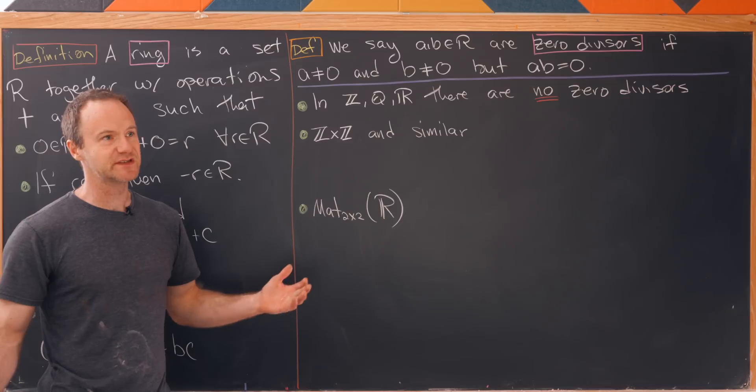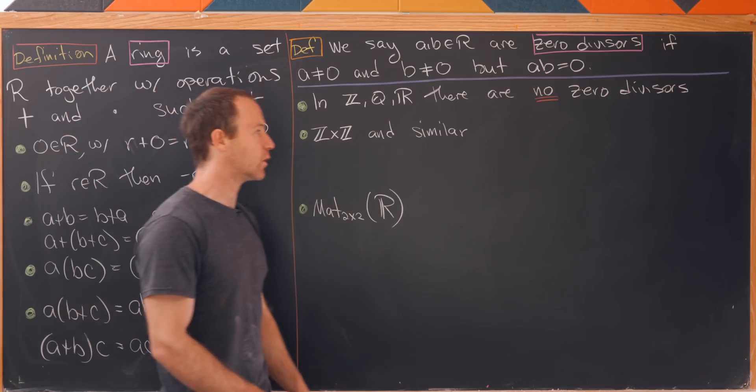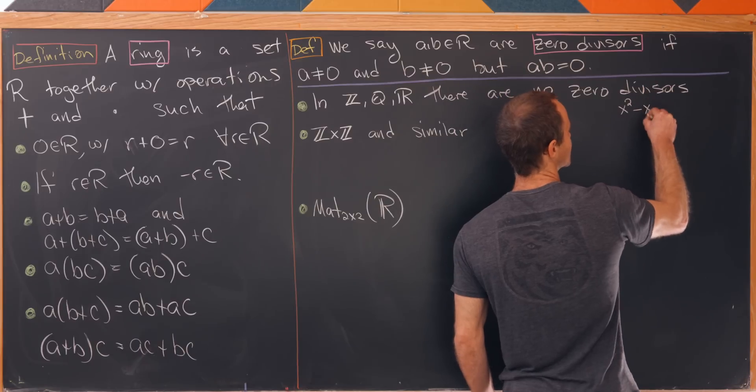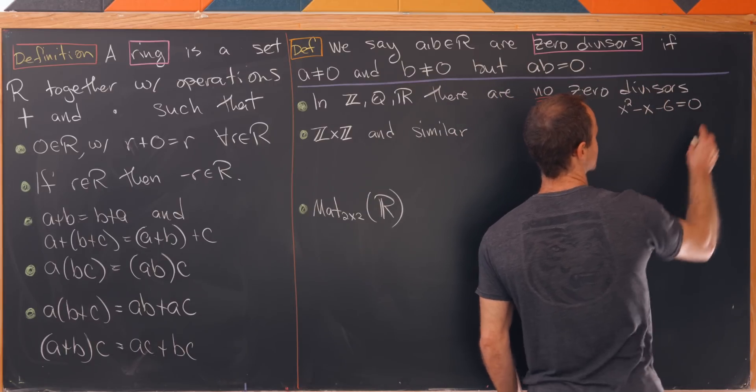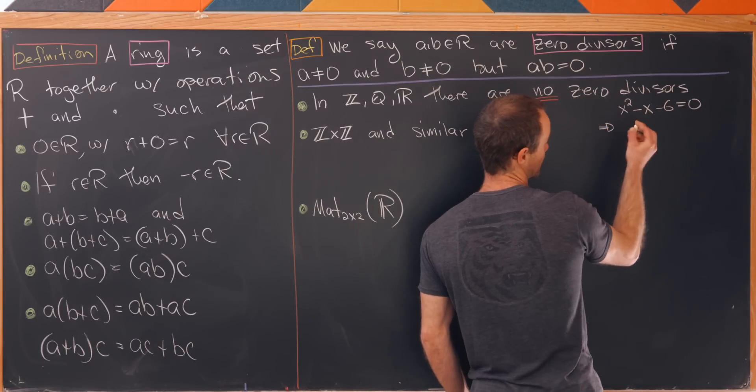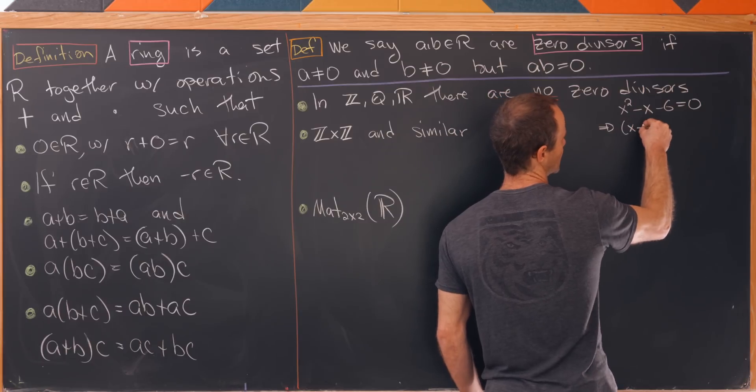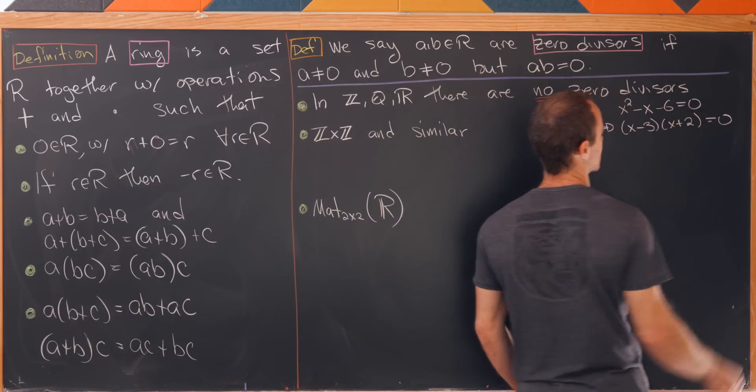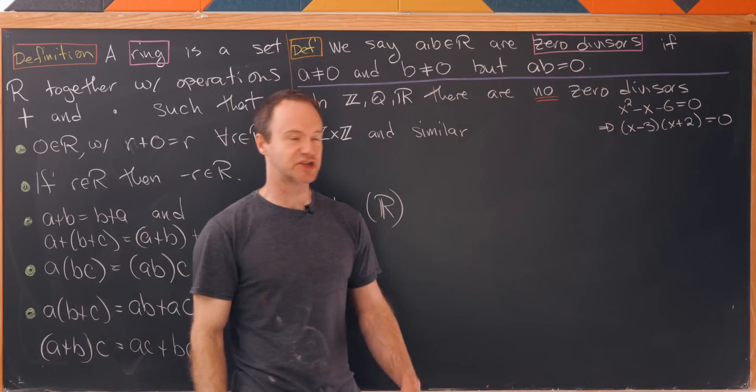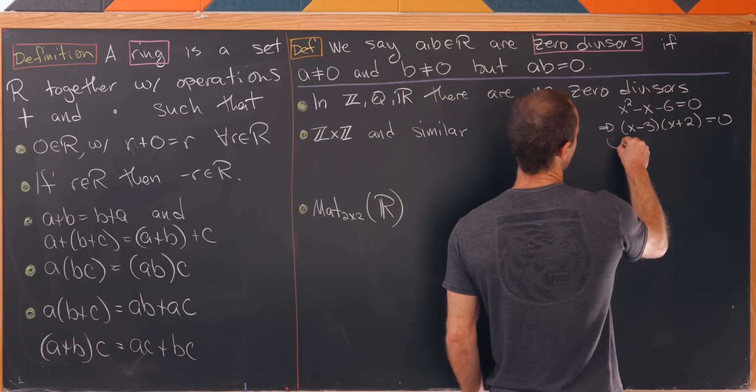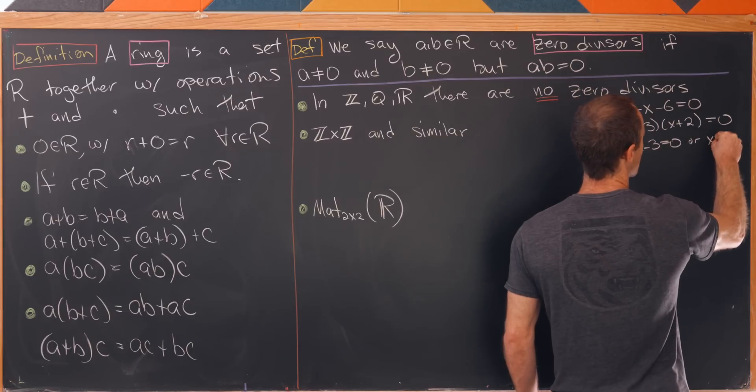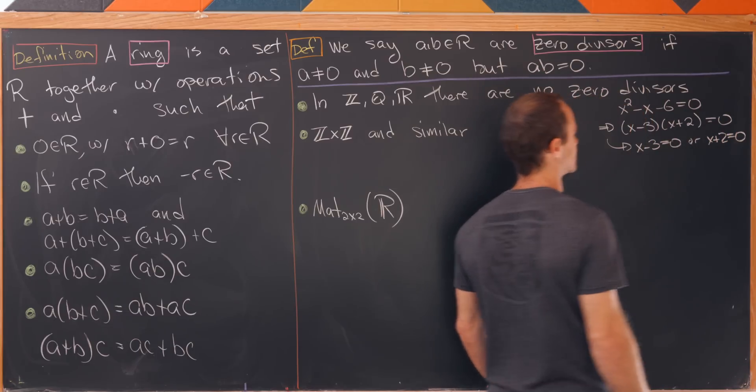So you use this all the time to solve equations over the real numbers. For instance if you take x squared minus x minus 6 equals 0 you would generally factor this as something like (x minus 3)(x plus 2) equals 0. And then in order to solve this you would say oh well I know that either x minus 3 equals 0 or x plus 2 equals 0.